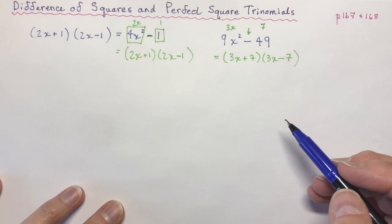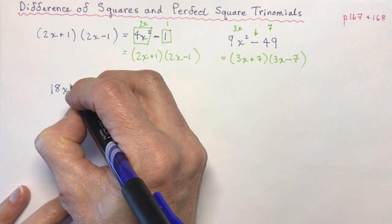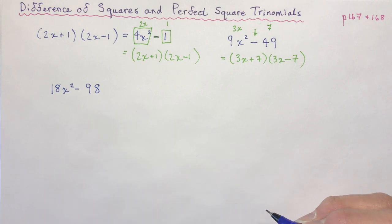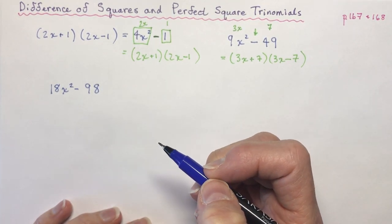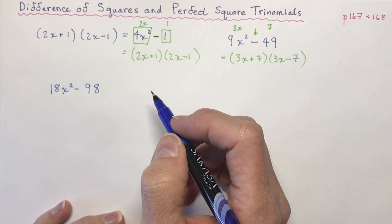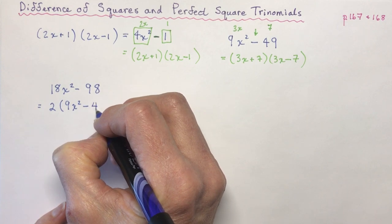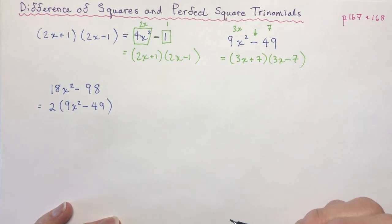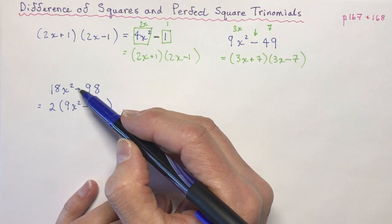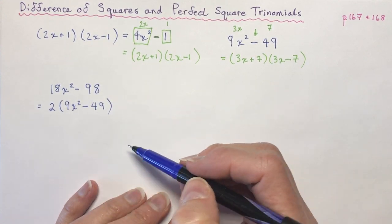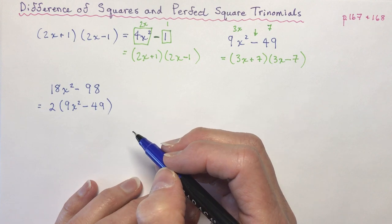Sometimes a teacher will try to fool you and give you something like 18x squared minus 98. You might say, is it a difference of squares? No — I can't take the square root of 98 and I can't take the square root of 18. But what is the very first thing you have to remember when doing any factoring? Common factor! Once you take out a common factor of 2 you're back to 9x squared minus 49. Also, something like 5x squared minus 25 — you can take the square root of 25 but the square root of 5 is not a pretty number, so here it's only a common factor.